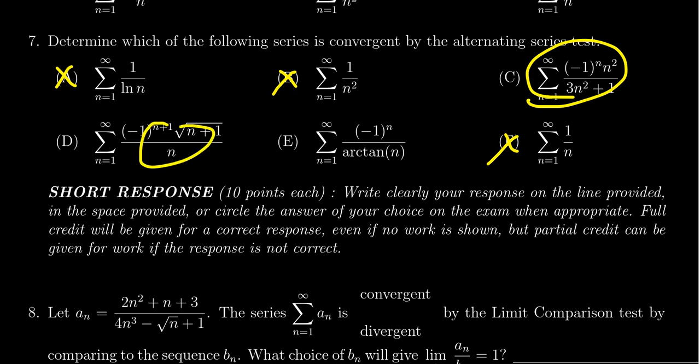To apply the alternating series test, you have to look at the absolute sequence - does that thing decrease? It's got to be positive, which it is because we're ignoring the alternating sign. Is it decreasing towards zero? That's what we're looking for - it has to eventually be decreasing towards zero.